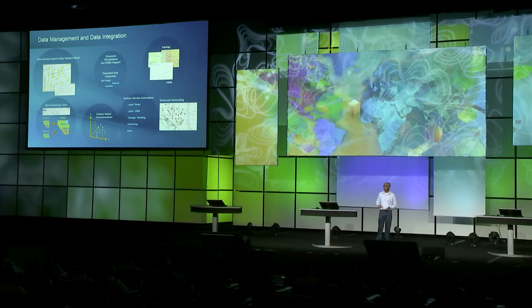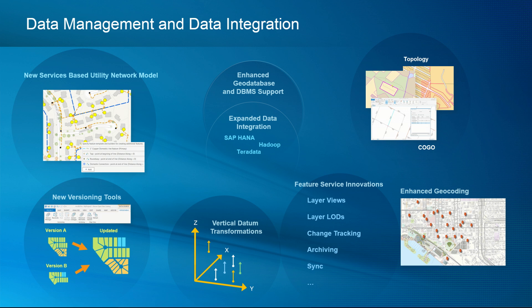Now let's talk about the capabilities of the platform. Data management and data integration — it all begins there. Feature services have been innovating rapidly through the year, with things like views on layers, levels of detail on features, change tracking, archiving, and sync. We're also working on more advanced information models — for example, for utilities — a new services-based information model with long transactions via versioning, all through a services model, coming by end of year. Continued support for different databases, data access technologies, and geocoding rounds out this very active area.